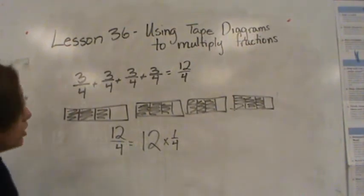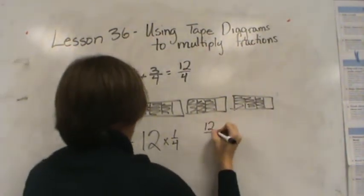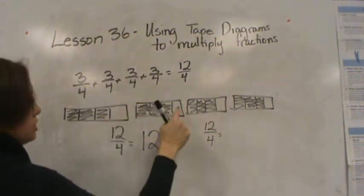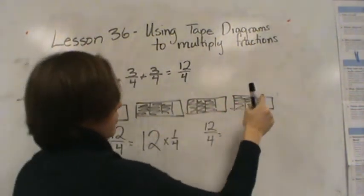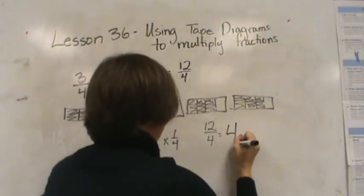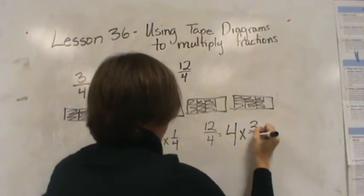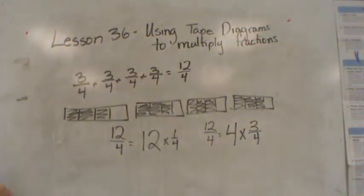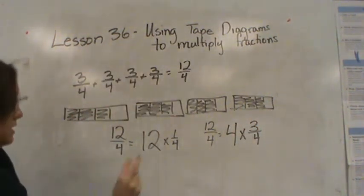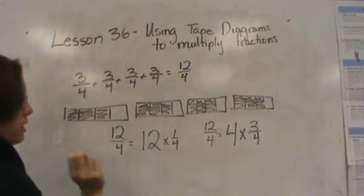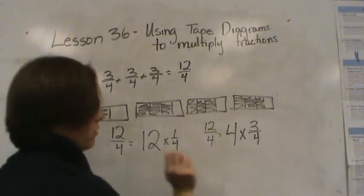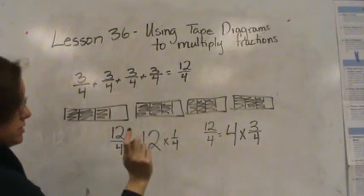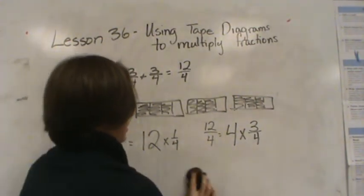It is also the same as saying 12/4 is the same as 1, 2, 3, 4 — I have 4 sets of 3/4. So two ways to represent it: 12 times 1/4 or 4 times 3/4. They're both equal to 12/4.